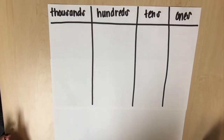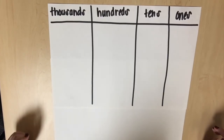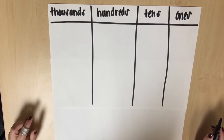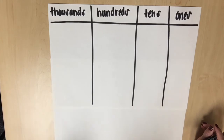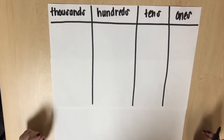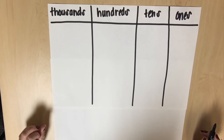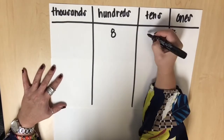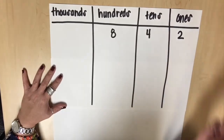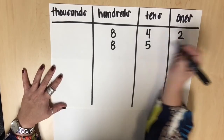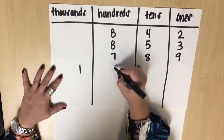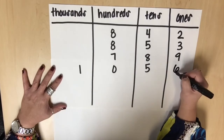Students can also use a place value chart to help them compare and order numbers. Let's use the following real-world situation: the librarian counted 842 picture books, 853 chapter books, 789 comic books, and 1056 non-fiction books. Order the books from greatest to least. I'm going to model what that looks like in my place value chart, placing each number in the chart.